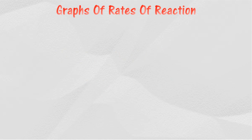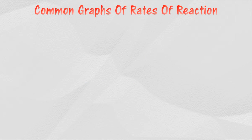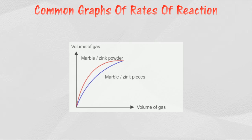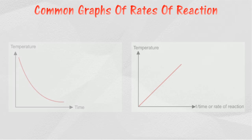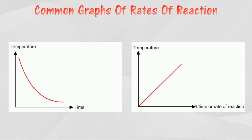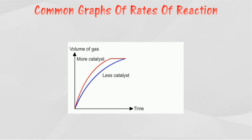Graphs of the rates of reaction. Here are some common graphs that are related to the factors that affect a particular reaction: volume of gas collected versus time, concentration of reactant versus time, concentration of reactant versus one over time, temperature of reaction versus time, temperature of reaction versus one over time, reaction with more catalyst versus time, and reaction with less catalyst versus time.